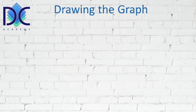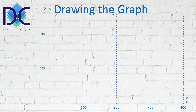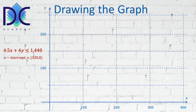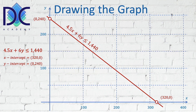Let's look at how it goes in the graph step by step. Here is the graph created for this exercise. For the first inequality, 4.5x + 6y ≤ 1440, the x-intercept is (320, 0) found on the x-axis and the y-intercept is (0, 240) found on the y-axis. We draw the line between those two points and identify the zone that complies with the constraint. Plugging in (0, 0) confirms this is the zone below the line.